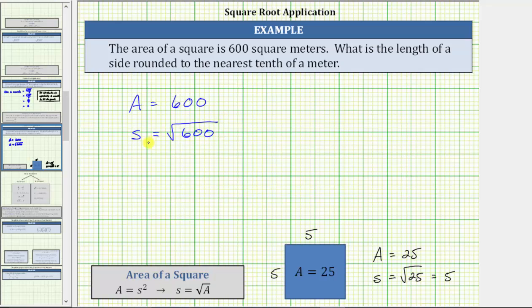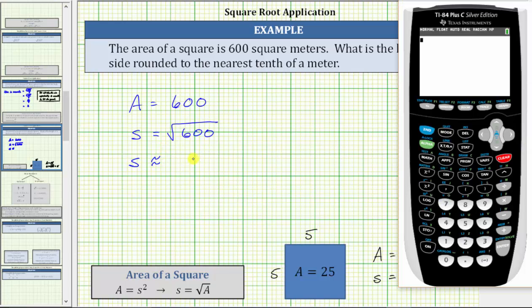And because the square root of 600 does not simplify perfectly, we will use a calculator to approximate this value to the nearest tenth of a meter. To enter the square root of 600, we press second x squared, which brings up the square root, and then we enter 600, then press enter.